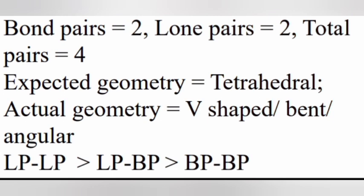2. Bond pairs equal to 2. Lone pairs equal to 2. Total pairs equal to 4. Expected geometry tetrahedral. Actual geometry V-shaped, bent or angular.